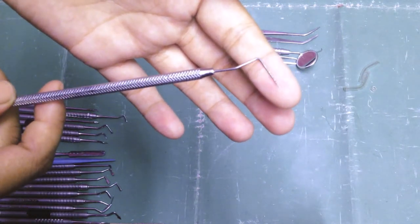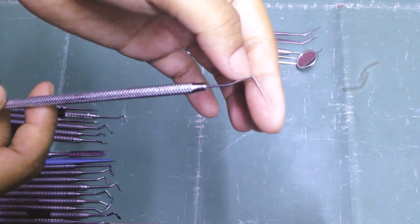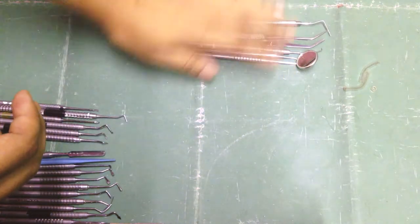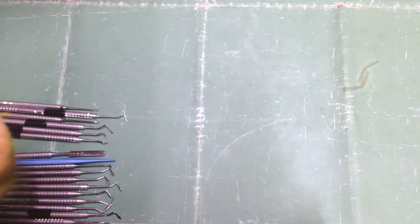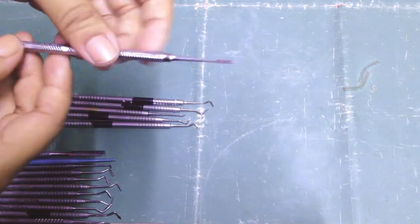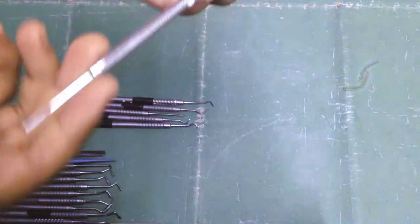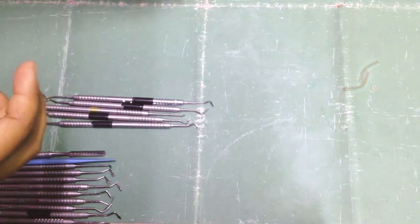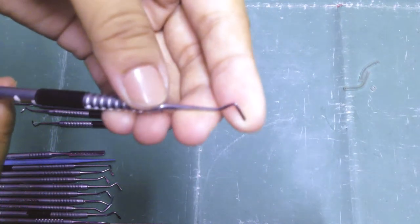As you can see, some markings. So these are diagnostic instruments. Now let's move on to hand cutting instruments. Let's start with chisel. This is a straight chisel. Then we have enamel hatchet, and I will hatch it.